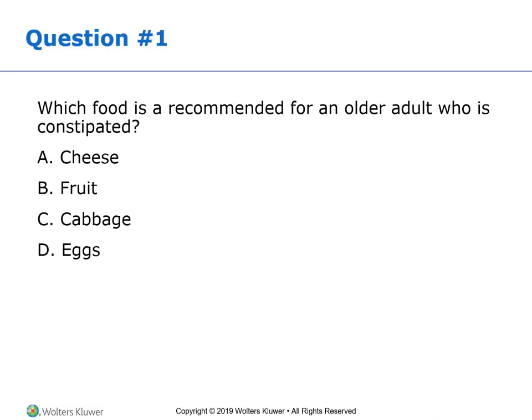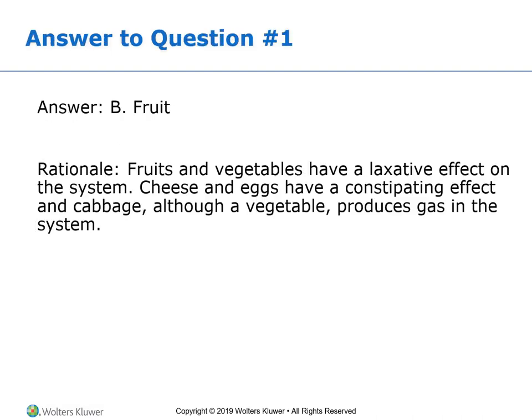Which food is recommended for an older adult who is constipated? Choices are cheese, fruit, cabbage, or eggs. If you said fruit, you'd be right. Fruits and vegetables have a laxative effect on the system. Cheese and eggs have a constipating effect. Cabbage, although a vegetable, will produce gas.